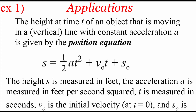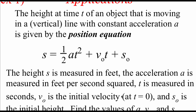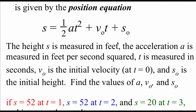Next example is an application problem. We've got the height of an object at a time of t seconds moving in a vertical line, given by the equation s equals one-half a times t squared plus v-sub-0 times t plus s-sub-0. That s value is our height measured in feet. A stands for acceleration measured in feet per second squared. t is our time in seconds. v-sub-0 represents the initial velocity at time zero, and s-sub-0 represents the initial height of our object. We're going to set up a system of equations to figure out those missing a, v-sub-0, and s-sub-0 values.